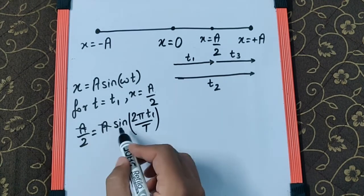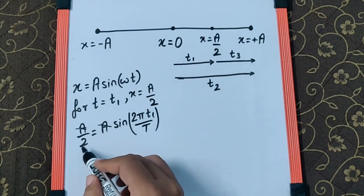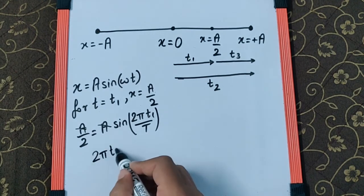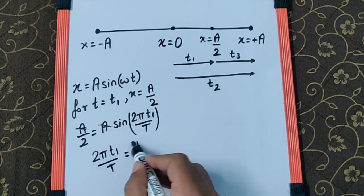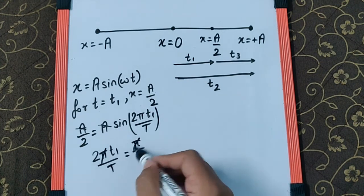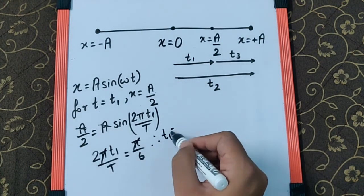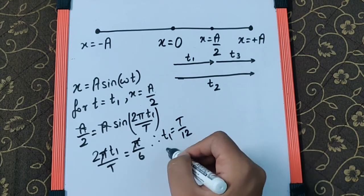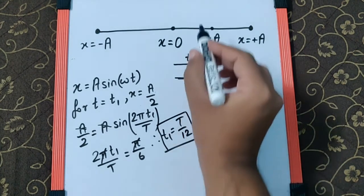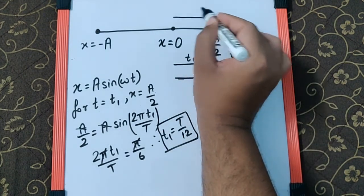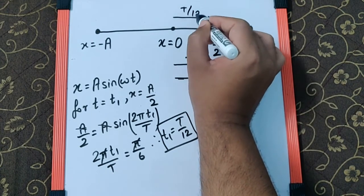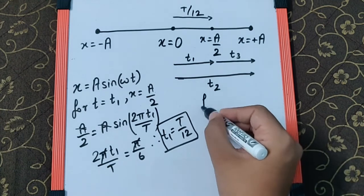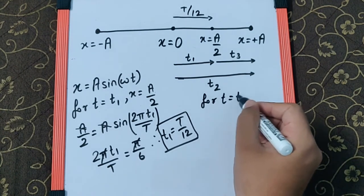The 'a' cancels, and sin θ = ½ when θ = 30° or π/6 radians. So 2πt₁/T = π/6, and π cancels, giving t₁ = T/12. The time taken to travel from the mean position to a/2 is T/12.